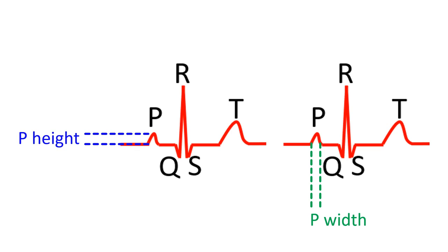Width is increased in enlargement of the left atrium and height is increased in enlargement of the right atrium. If both are increased, both atria are enlarged.